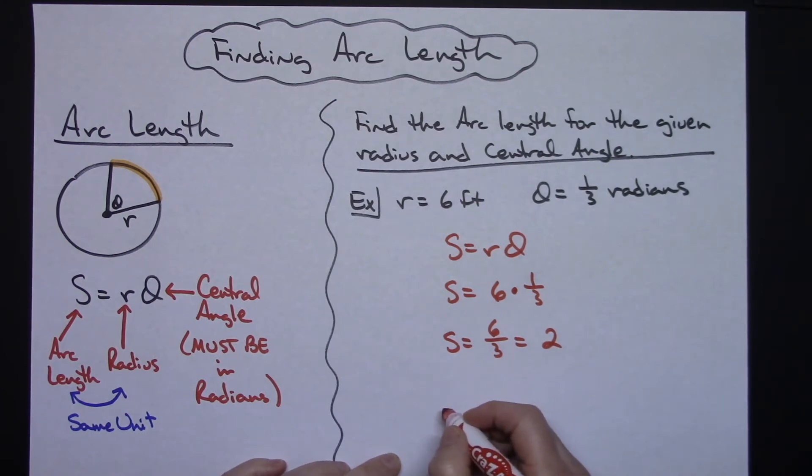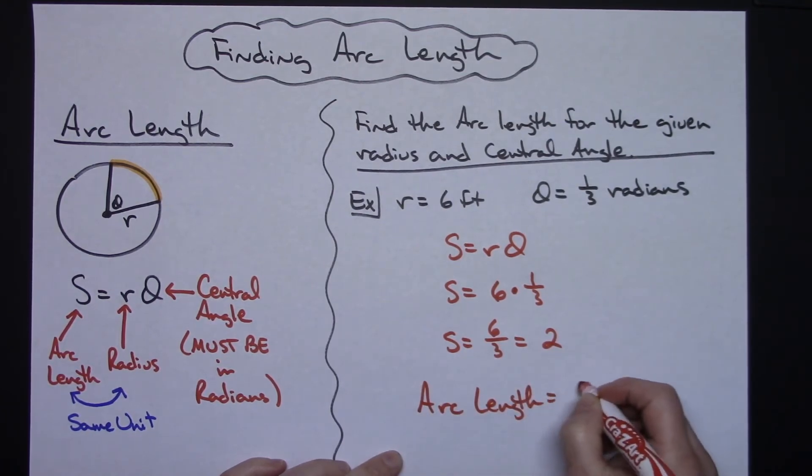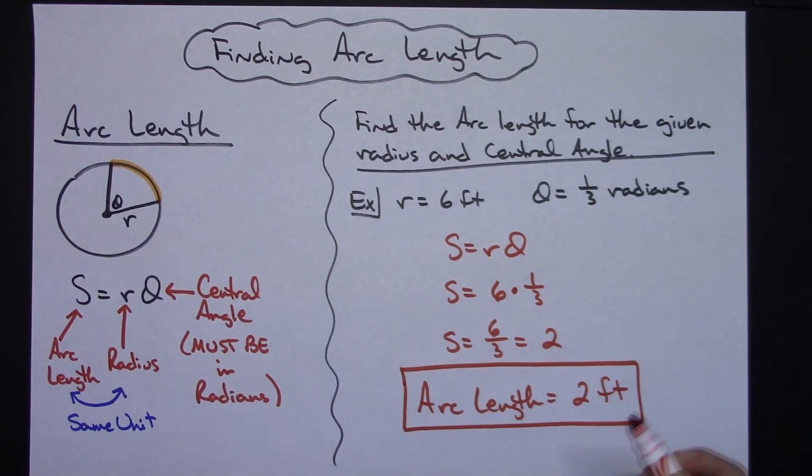So then that means my arc length is going to be two feet. Arc length is equal to two feet. So, after you memorize the formula and get used to what it is and remember that your theta has to be a central angle and also has to be in radians, then it's a pretty straightforward formula, plug and chug.